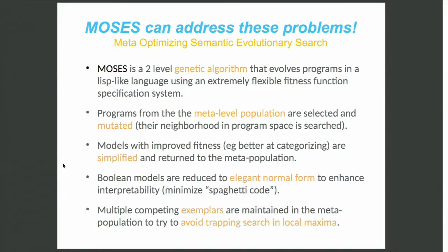Sorry, I'm getting really lost here. A genetic algorithm, as applied here, will solve a categorization problem by generating random functions to make the categorization, and then using supervised learning, it will compare the results of the functions with the known results, then select ones with better scores, and evolve answers to functions.